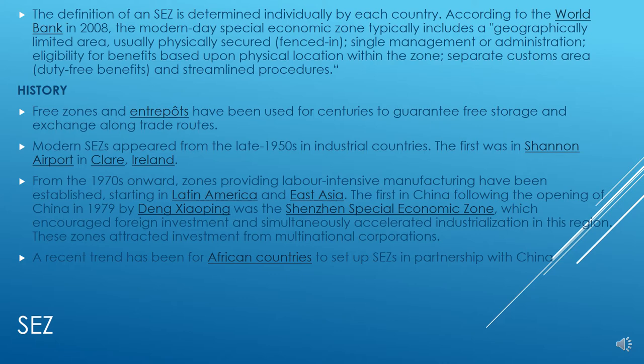Looking at the history of special economic zones, free zones and entry ports have been used for centuries to guarantee free storage and exchange along trade routes. Modern special economic zones appeared from the late 1950s in industrial countries. The first was in Shannon Airport in Clare. From the 1970s onwards, zones providing labor-intensive manufacturing have been established, starting in Latin America and East Asia.